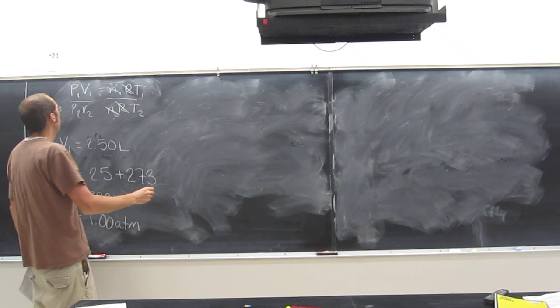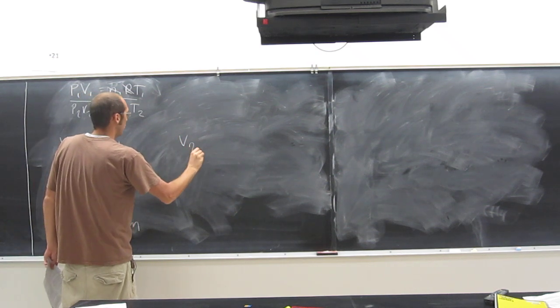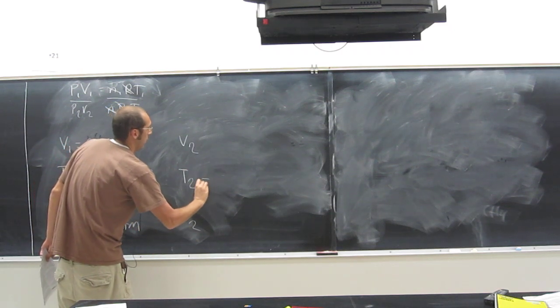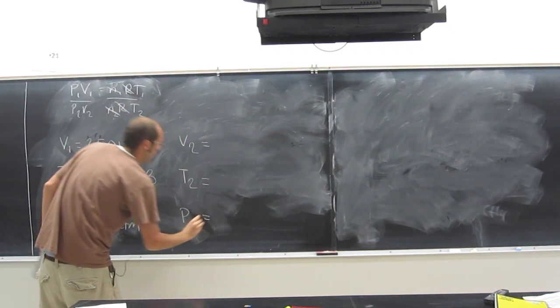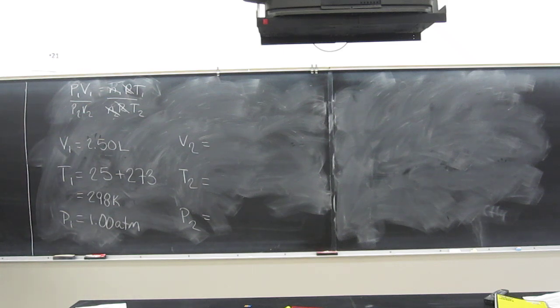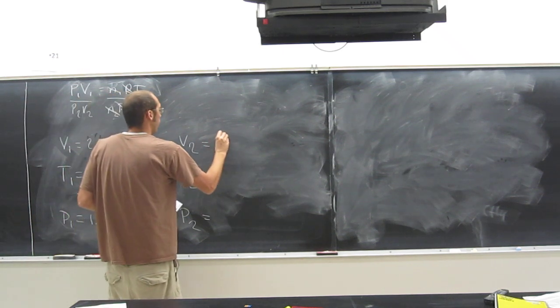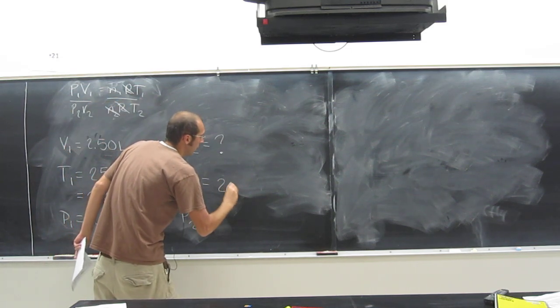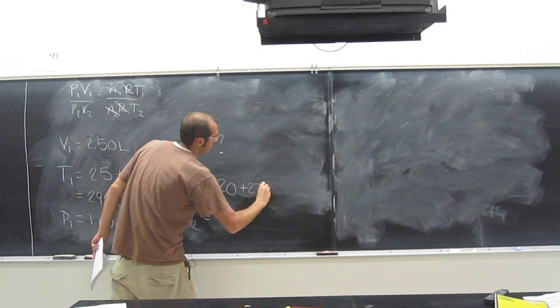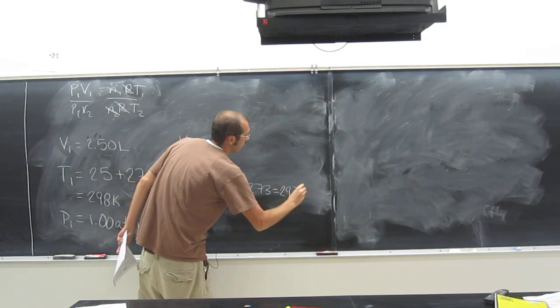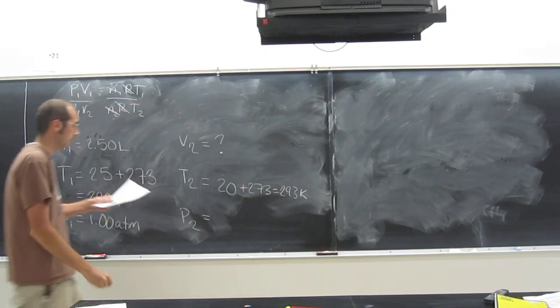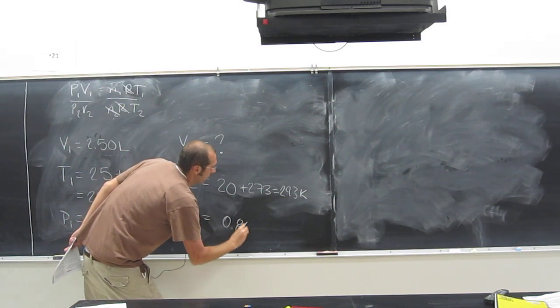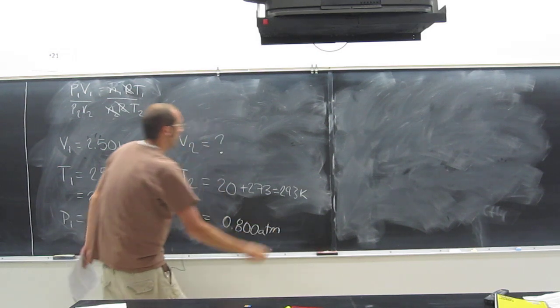Do we know these other ones? V2, T2, and P2? We don't know V2, that's what we're looking for. Do we know T2? Yes, it's going to be 20 plus 273, 293 Kelvin. And P2, do we know that? 0.800. Very good.